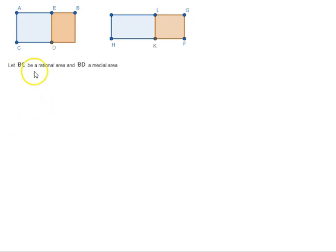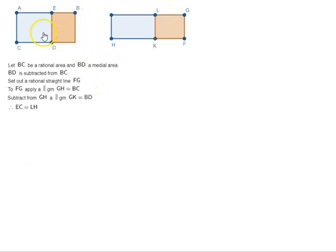Let BC be a rational area and BD a medial area. As you can see, BD is subtracted from BC. Set out a rational straight line FG. To FG, apply a parallelogram GH equal to BC. Subtract from GH a parallelogram GK equal to BD. Therefore, the remainders will be equal. That is EC is equal to LH.